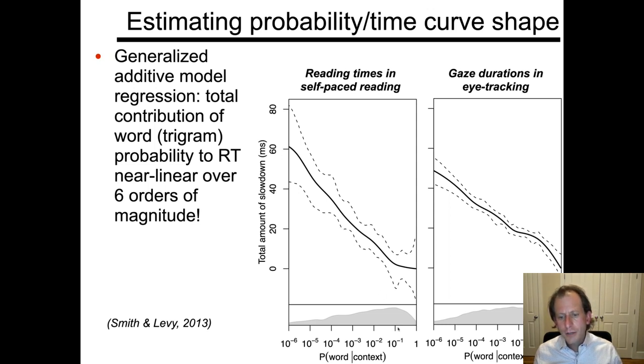And it turns out that over several orders of magnitude, and this is using a trigram language model—we'll revisit this result later on in the semester using more sophisticated models with deep learning—but in a trigram language model, the relationship is more or less linear. For every factor of 10 decrease in word probability, you have more or less a constant increase in the amount of time spent reading the word. This is true both in self-paced reading and in eye tracking, and even the magnitude of the effect is pretty similar through the two methods.